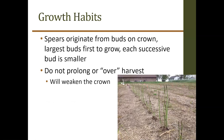On growth habit, asparagus spears originate from buds on a crown — the largest buds grow first and each successive bud is smaller. When you order crowns to plant, you'll see a whole bunch of buds. Year after year as the plant grows, that crown gets larger and larger, increasing your yield over time. Because you're growing that perennial crown, you do not want to prolong or over-harvest, as this will weaken the crown. We'll get into specific harvest management recommendations later.